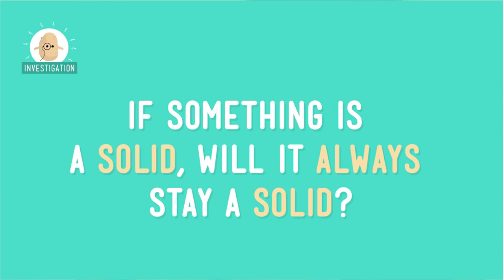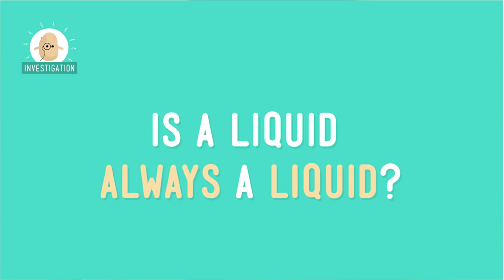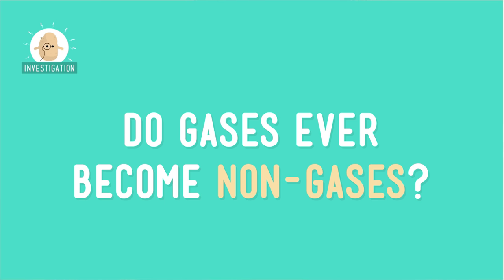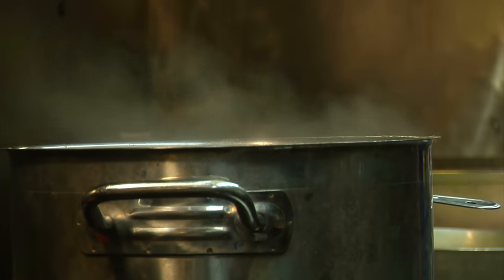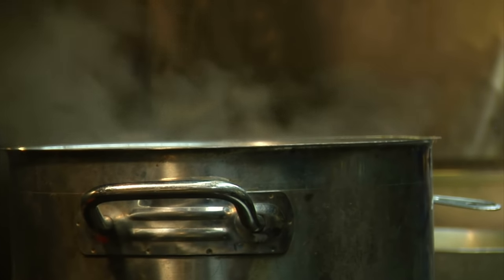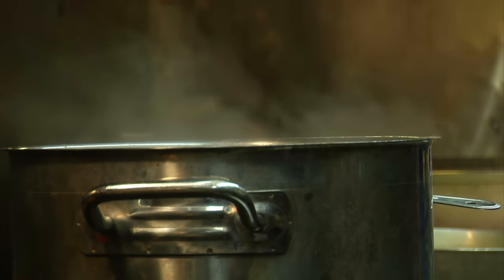But if something is a solid, will it always stay a solid? Is a liquid always a liquid? Do gases ever become non-gases? To find out if matter can change states, let's find examples of when objects' properties change. Here's one: a candle. It's solid, made of wax. But when you light the candle, the packed particles loosen up and the wax begins to melt — liquid wax. So a solid can become a liquid. Now here's another: let's say you've got a pot of water on the stove. If you heat a liquid up, its particles will move around so fast that they can't hold onto each other. When that happens, all of the particles fly apart and become a gas, like the steam you see when you boil water. So a liquid can become a gas.